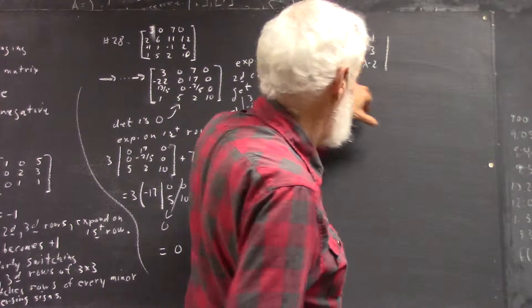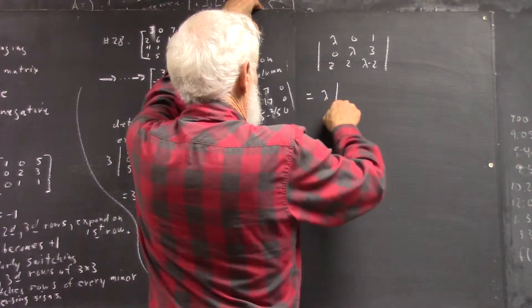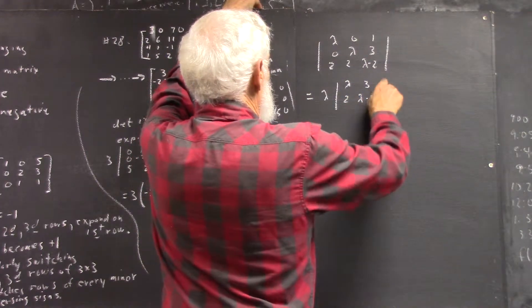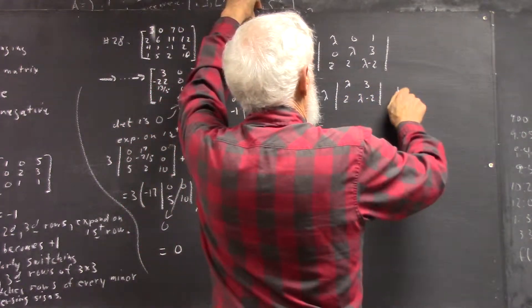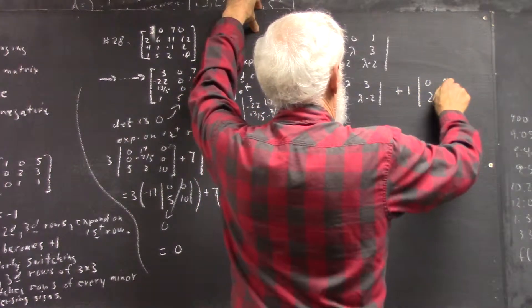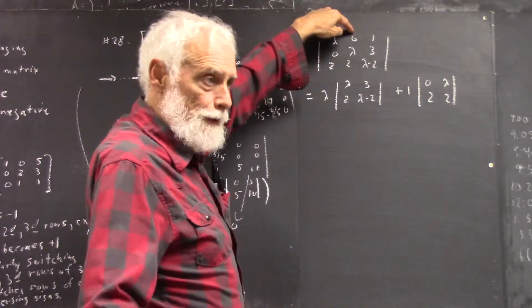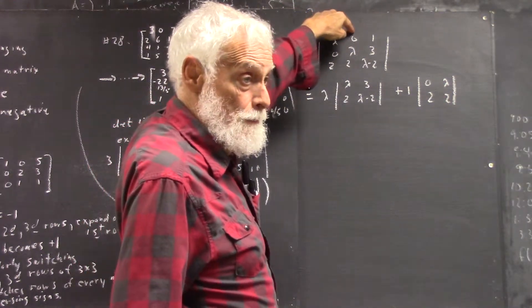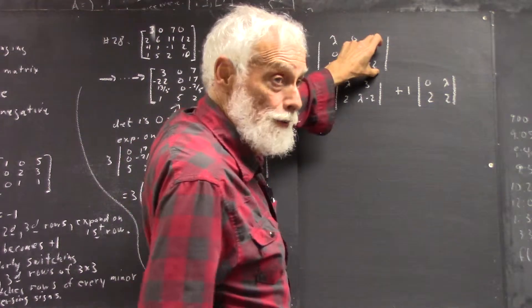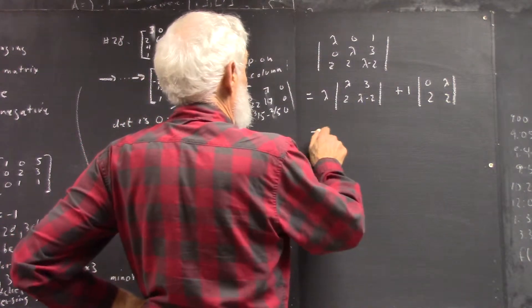But you do the determinant, right? If you do the determinant by the rule, you get lambda times the determinant of lambda 3, 2, lambda minus 2, plus 1 times the determinant of this matrix. And I didn't include the 0 because obviously that's going to give you 0, right? It would be minus 0 times the determinant of this thing, but you know, we're not doing that because it's a 0.